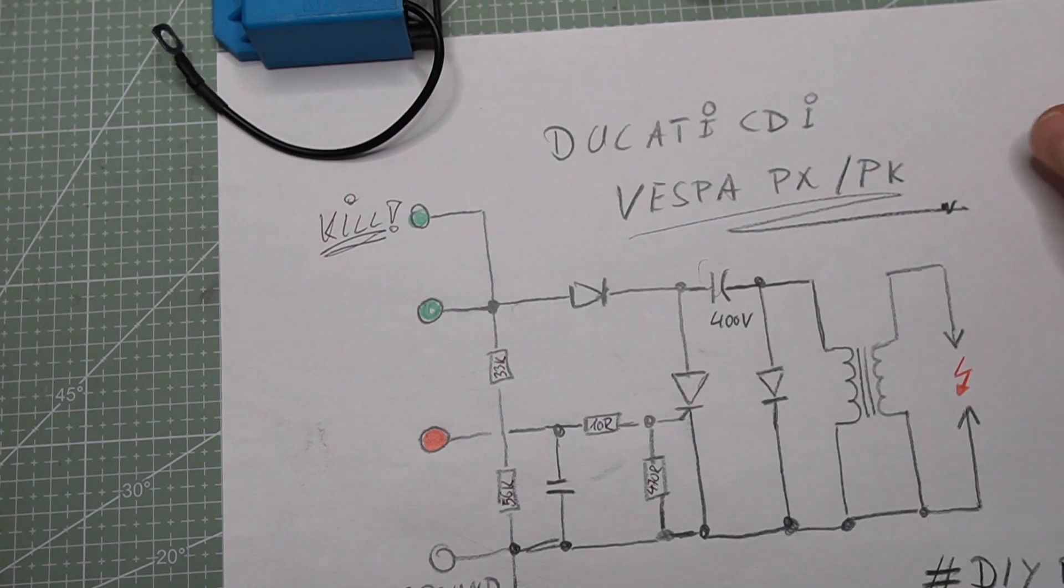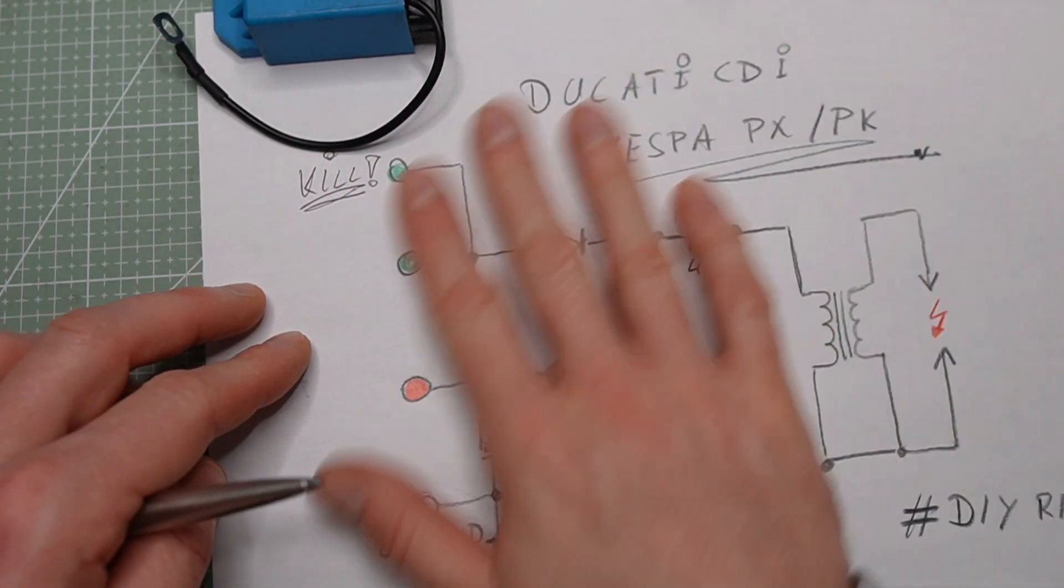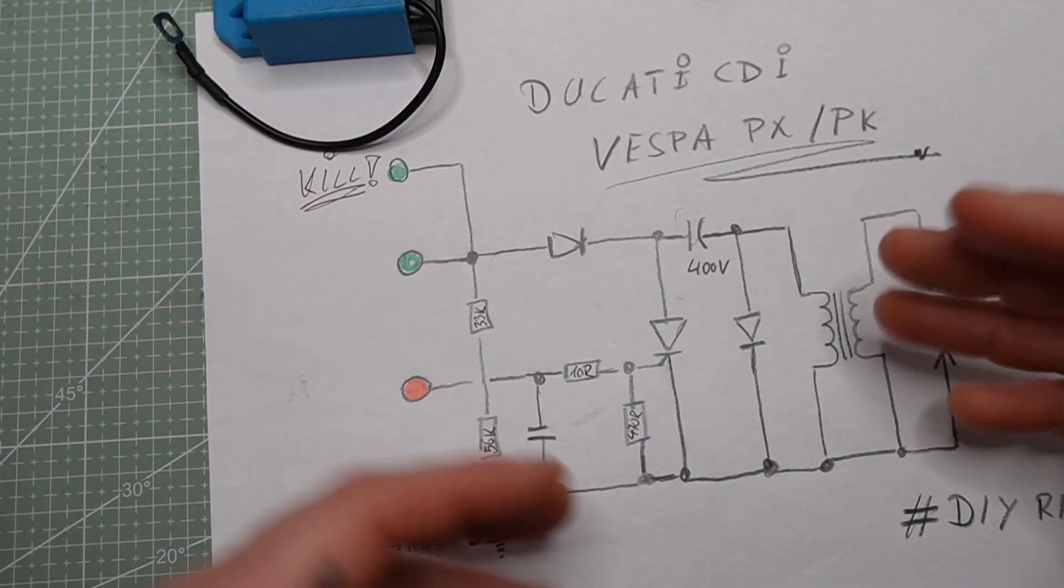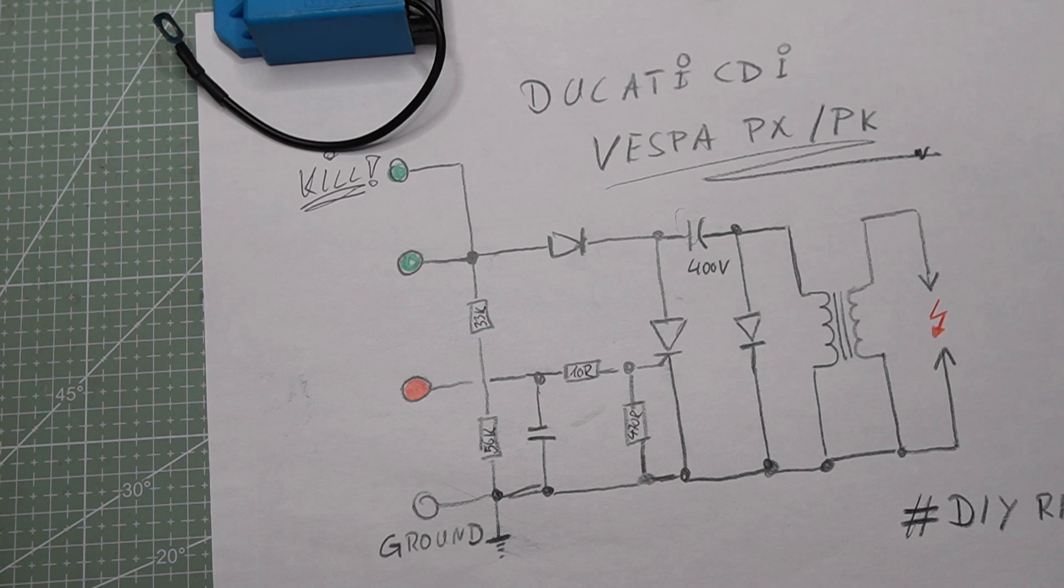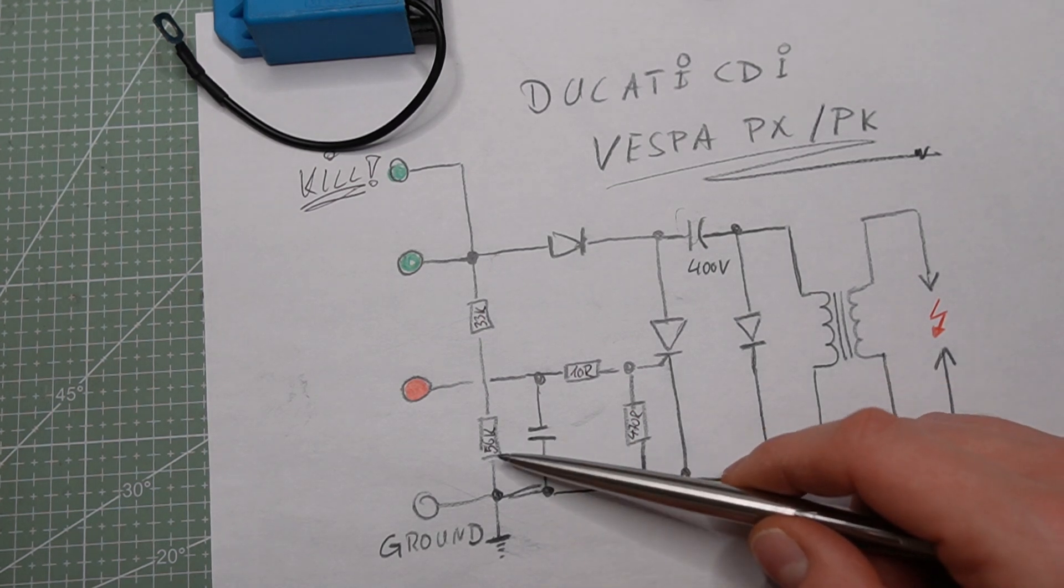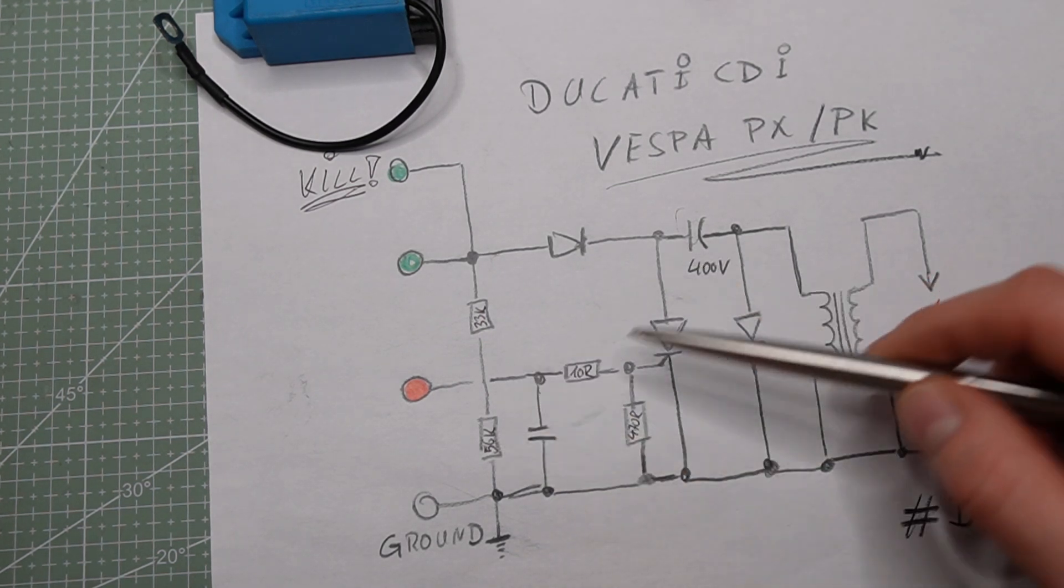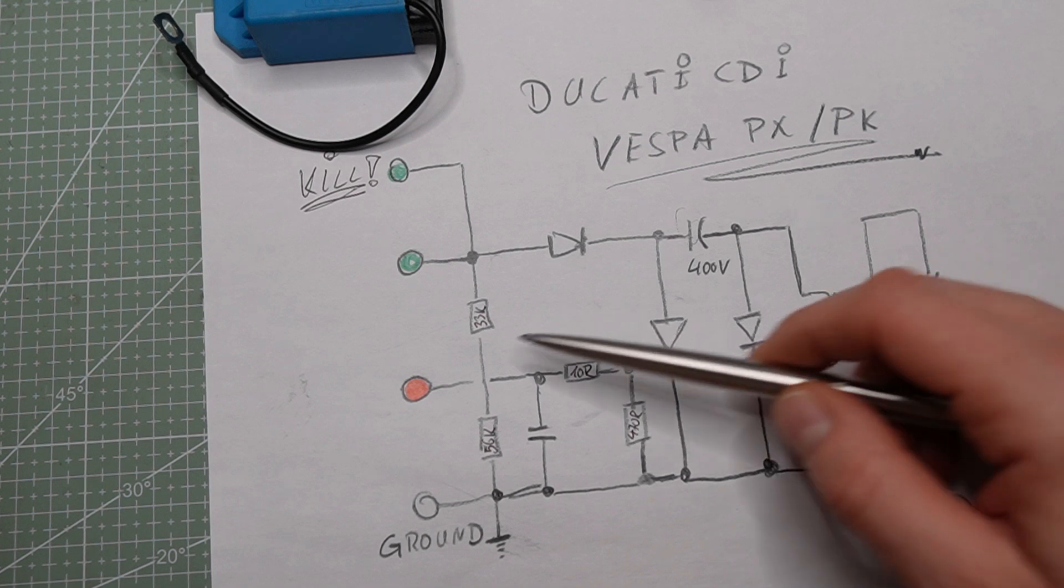Hope this nice Leonardo da Vinci art will help you a bit to understand what's going on. As you can see, we have a couple of resistances here: 56, 10, 470, 33.